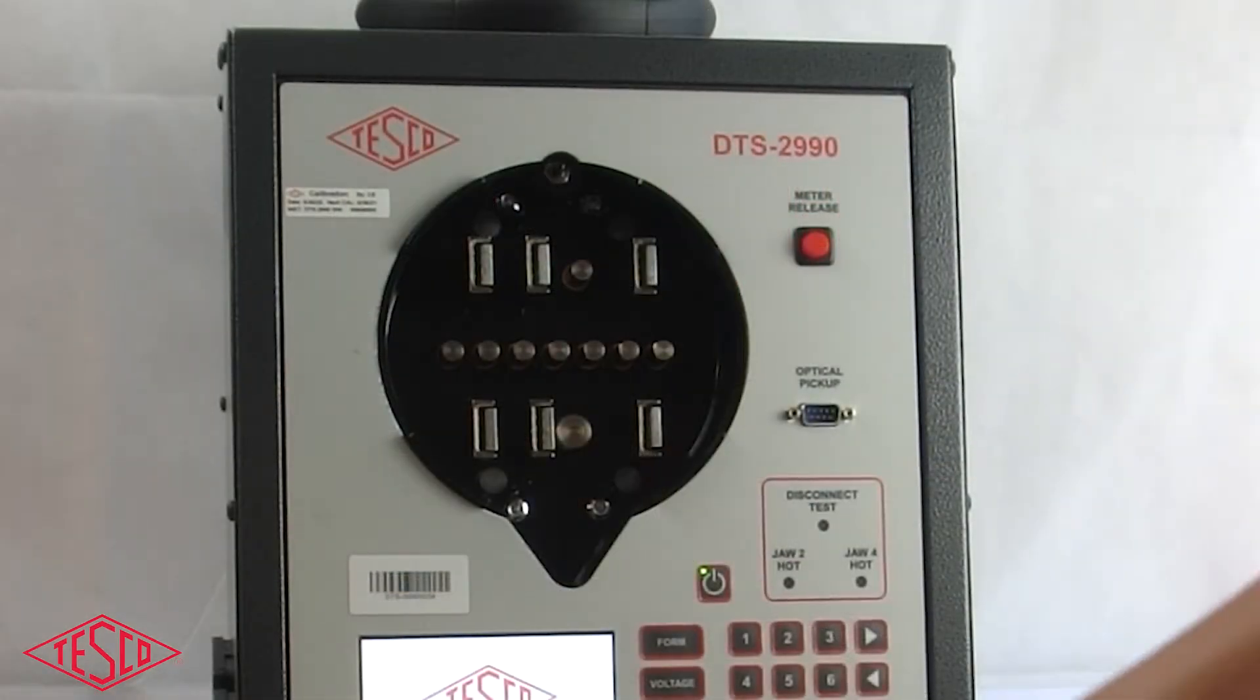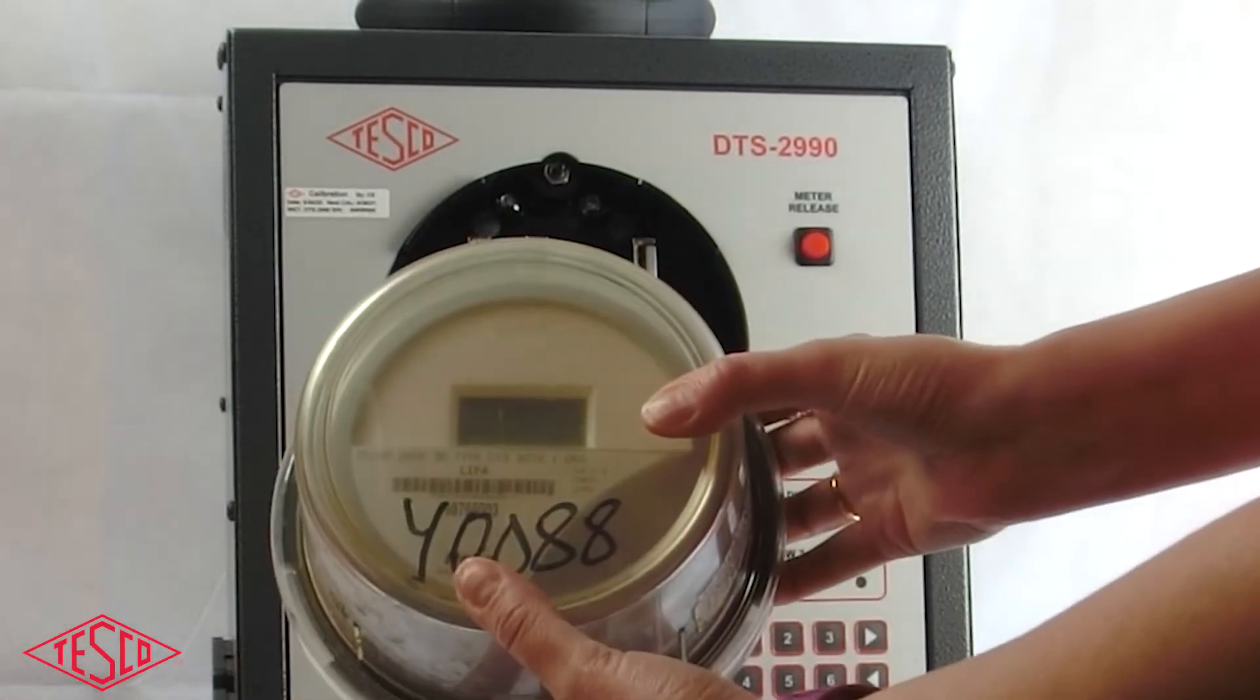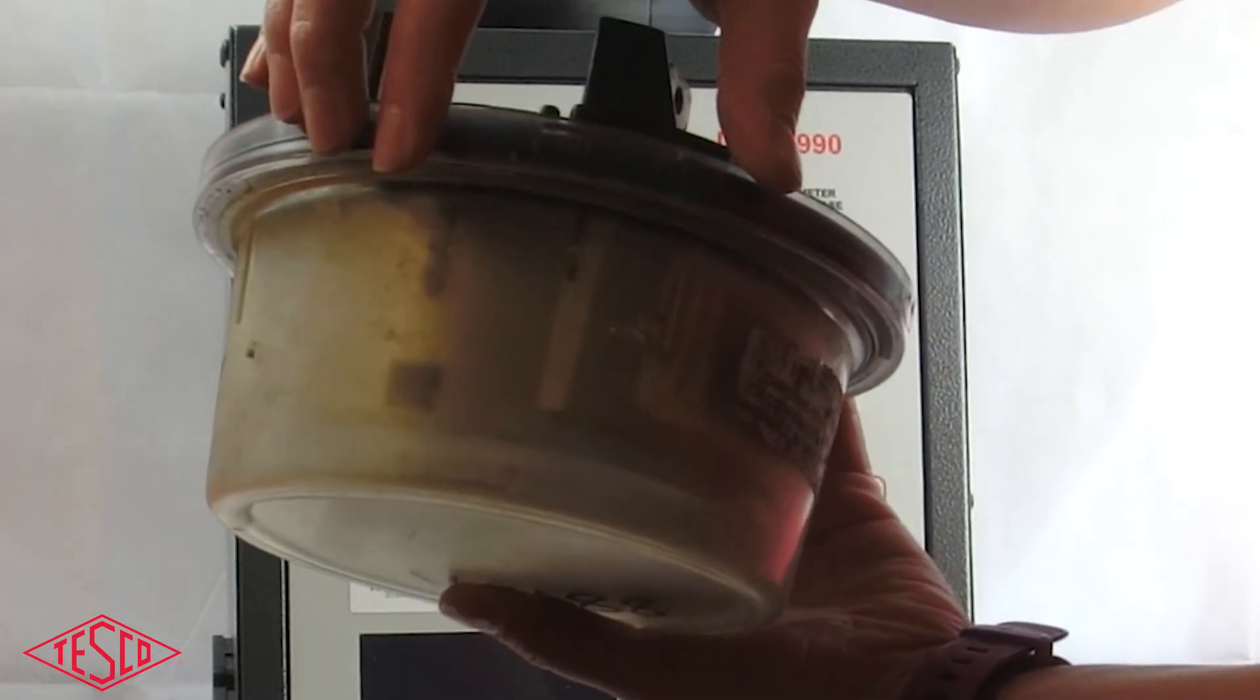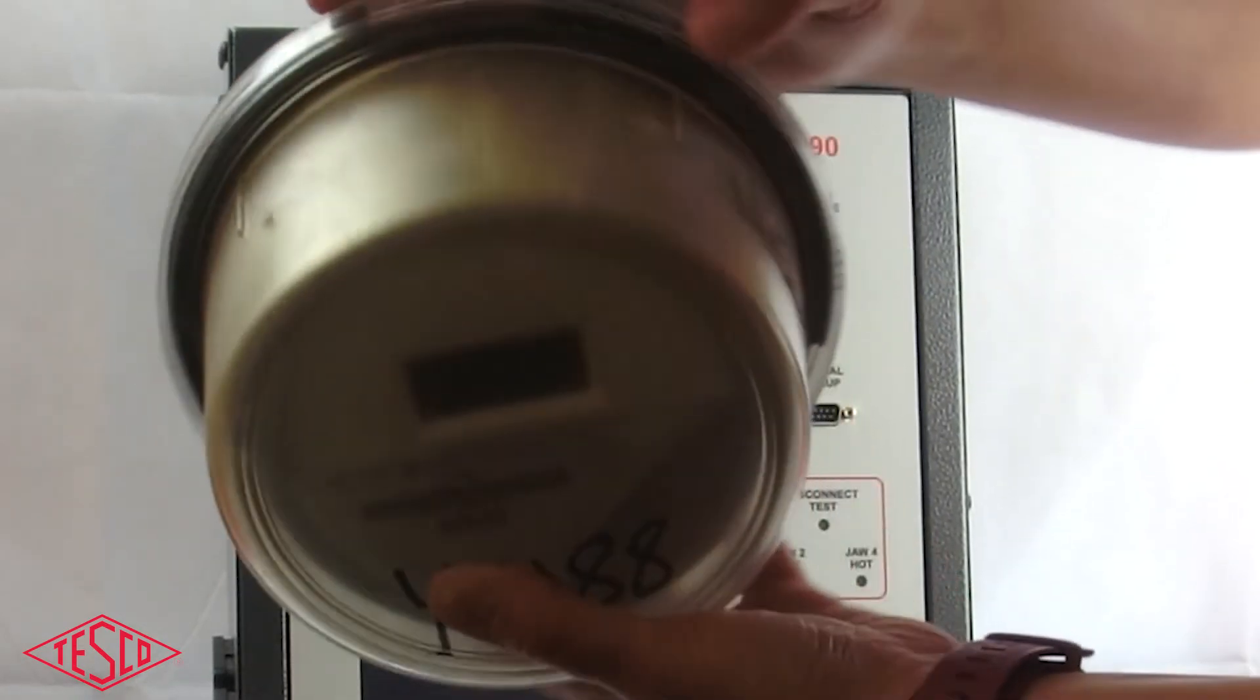Here, I found the dirtiest, filthiest, grimiest i-tron meter I could find with an optical port at the top. Look at this! You can't even see it! How is anything going to read through this filth? It is so gross.